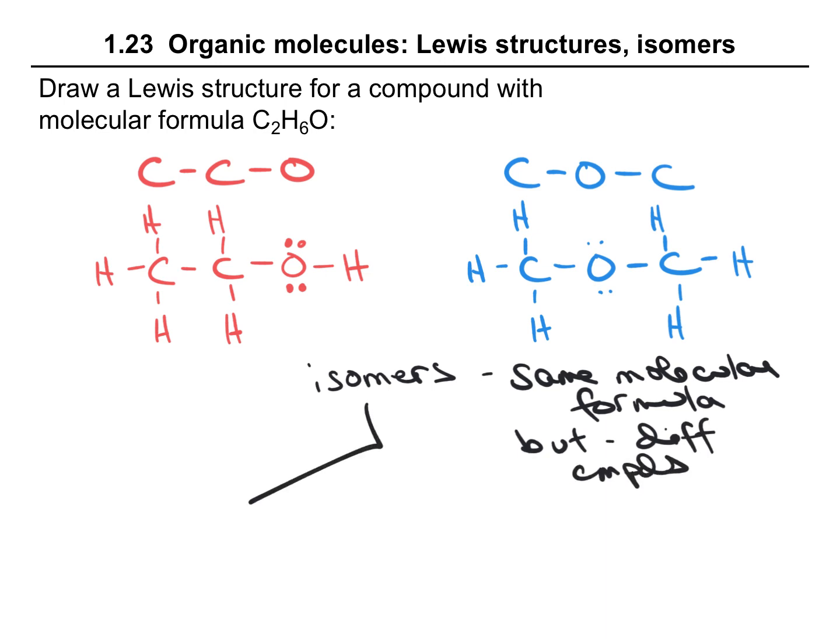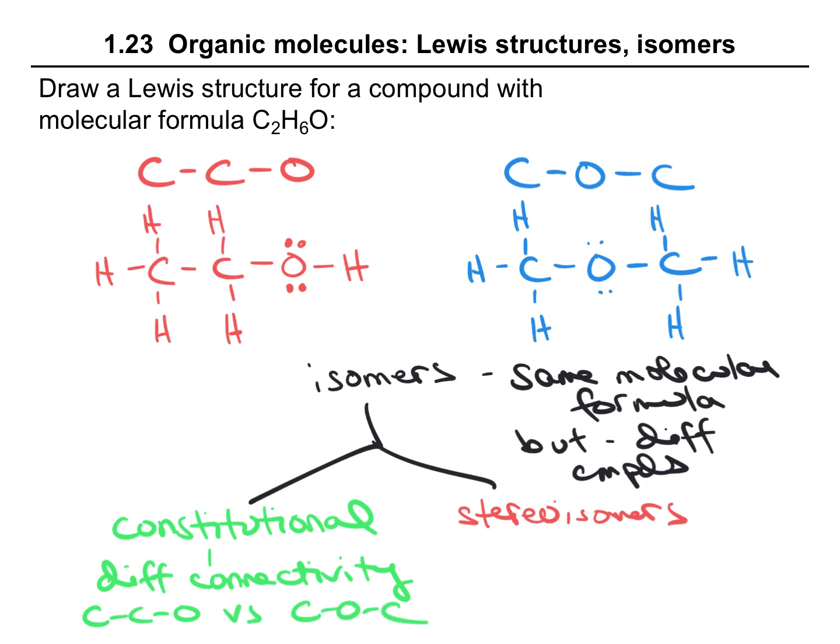Isomers can be subdivided into constitutional isomers or stereoisomers. With constitutional or geometric isomers, what we're talking about is different connectivity. So that's what we have here, where we have carbon-carbon-oxygen compared to carbon-oxygen-carbon. The atoms are connected together differently.